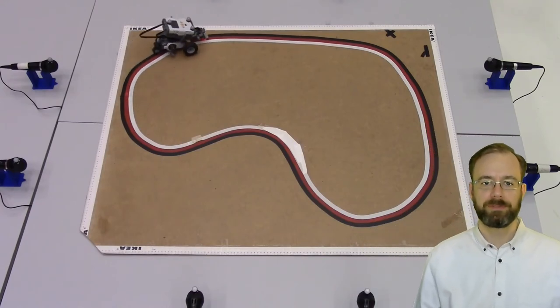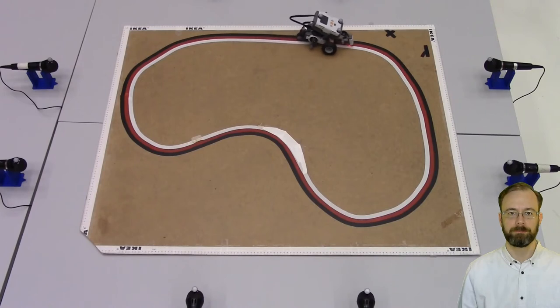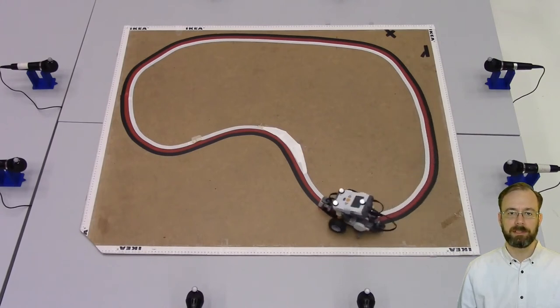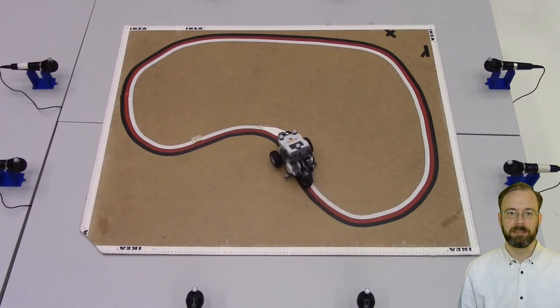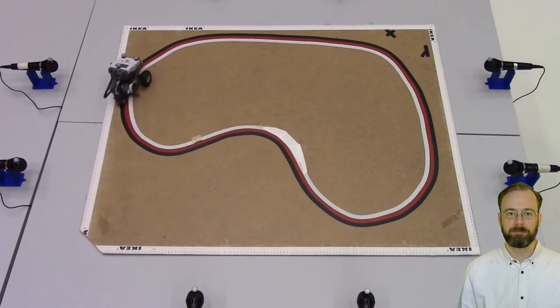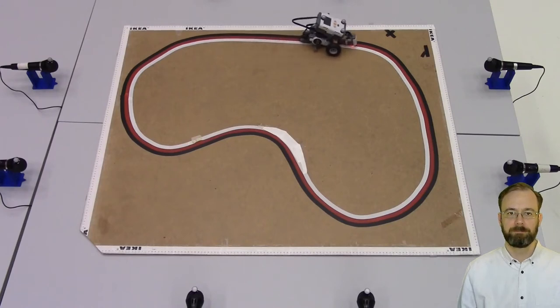Behind me right now you see a typical data collection session for this lab. All the important components are included. You see the Lego robot travelling around the track while emitting some annoying beeps at two hertz. These beeps are recorded by eight microphones, of which you see six in this setup. The two at the top are just outside the field of view.